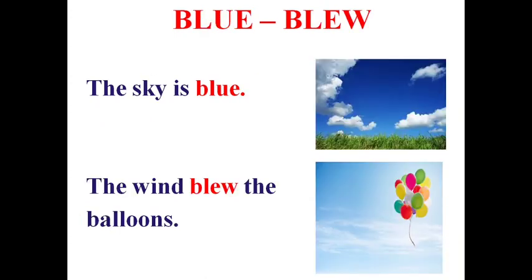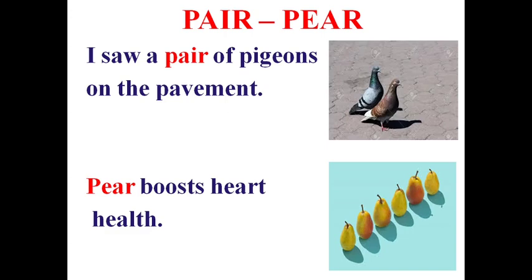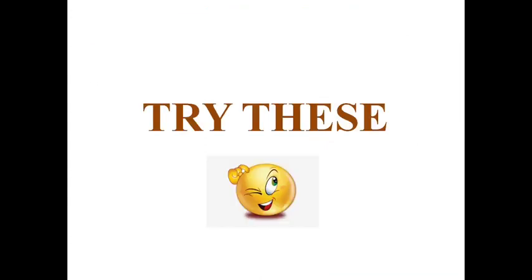Blue and blew: 'The sky is blue' — a colour; 'The wind blew the balloons' — blew is the past form of blow. Pair and pear: 'I saw a pair of pigeons on the pavement' — a pair means a couple; 'Pear boosts heart health' — it is a fruit.